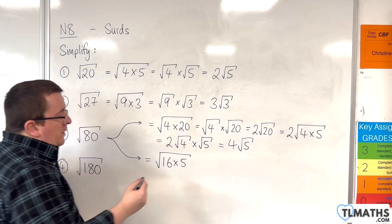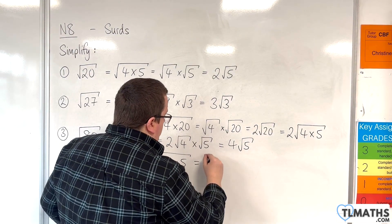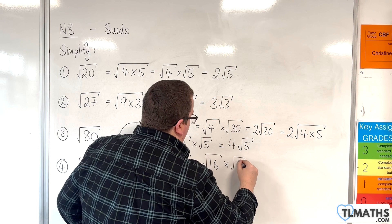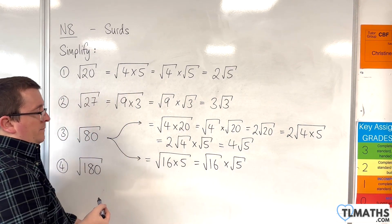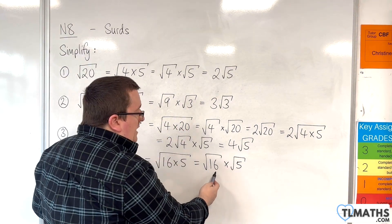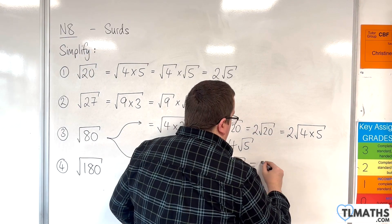Square root it. Split the surd. So square root of 16 times square root of 5. And square root of 16 is just 4, so 4 root 5.